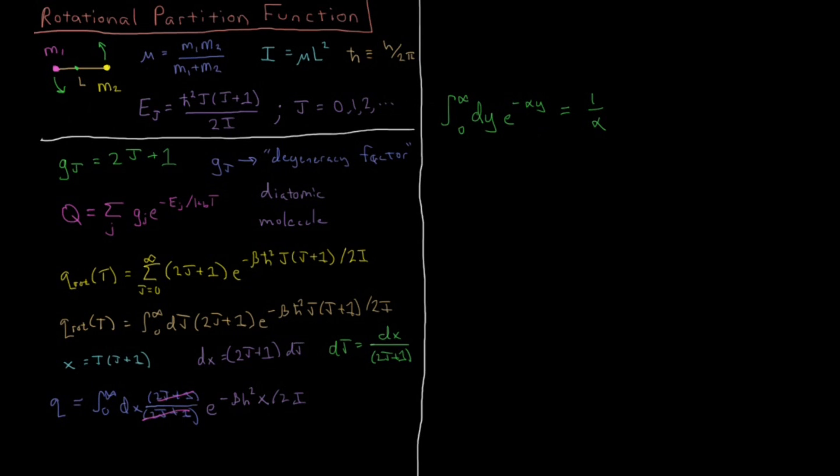So what is the alpha that we have? Our alpha is whatever we have times x. If we go down to our integral, we have beta h-bar squared over 2i.